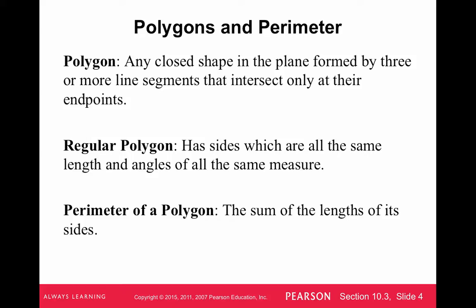But the perimeter of a polygon is the sum of the lengths of its sides. It's the distance around a figure. That's what perimeter means. Perimeter means around a figure.